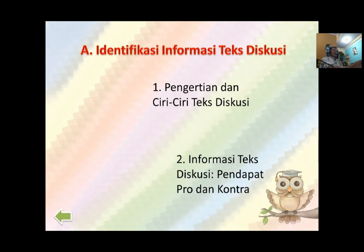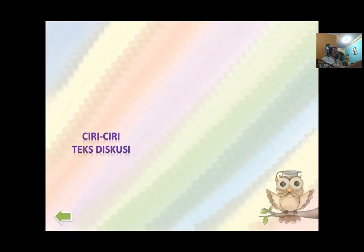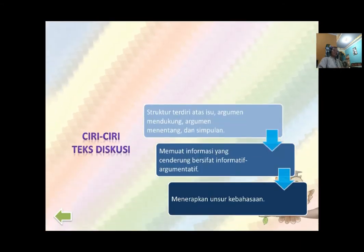Yang kedua nanti, informasi teks diskusi berupa pendapat yang setuju dan ada pendapat yang bertolak belakang. Pasti ada yang setuju dan tidak setuju — kalau semuanya setuju, diskusi tidak akan menjadi sesuatu yang hangat. Nah, struktur teks diskusi terdiri atas isu, argumen yang mendukung, alasan yang menentang, dan ada yang menyimpulkan. Diskusi terdiri dari pembahasan dengan alasan-alasan, bukti, fakta, dan data untuk mendukung, serta alasan-alasan untuk menentang.